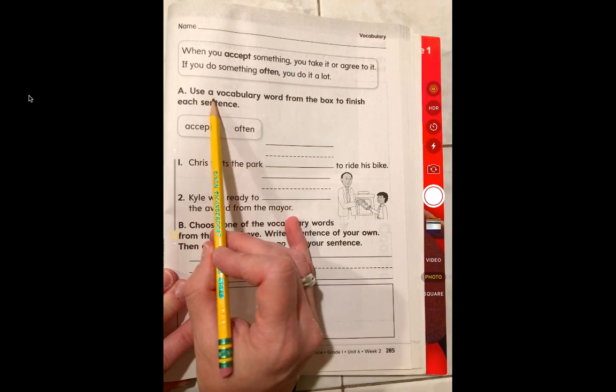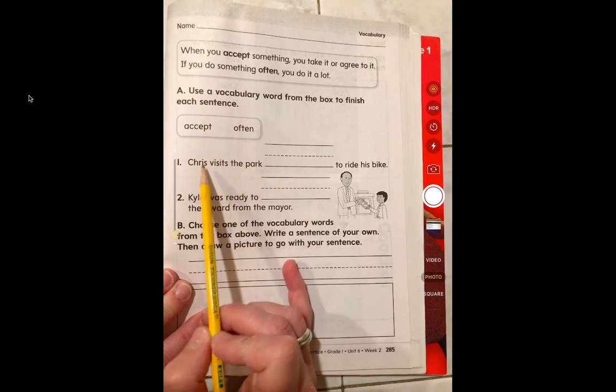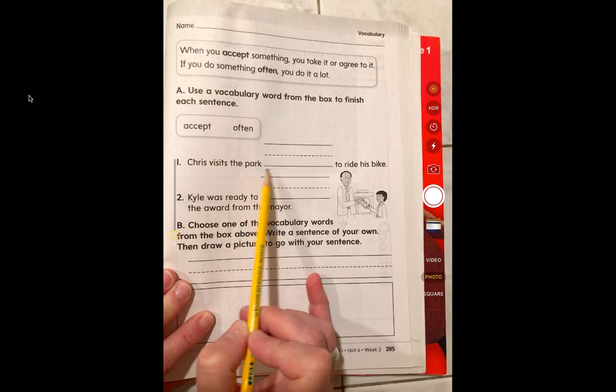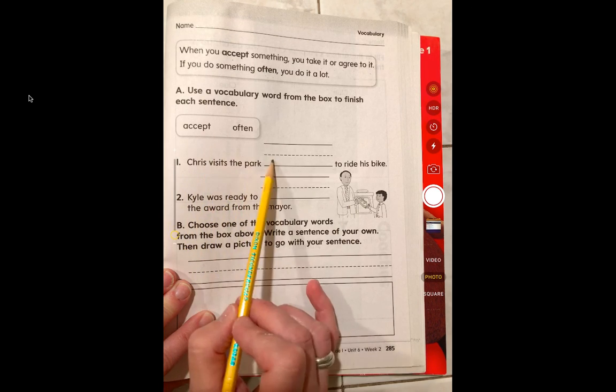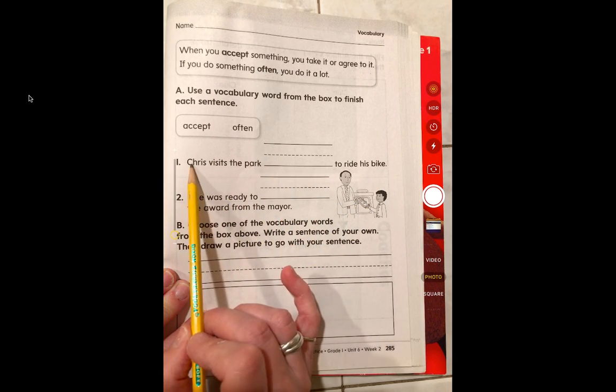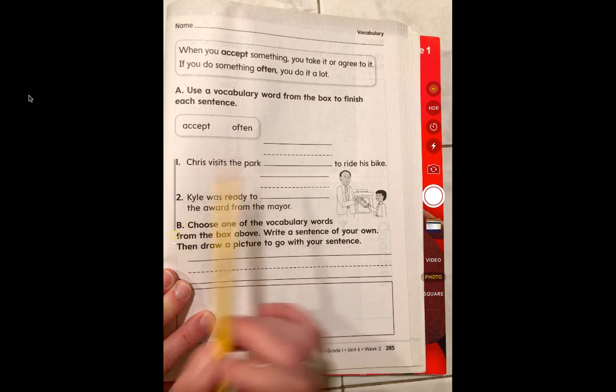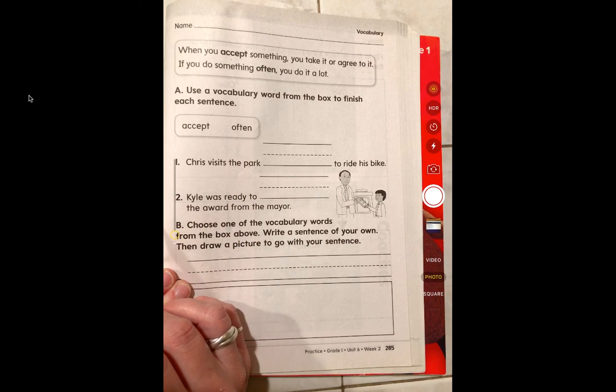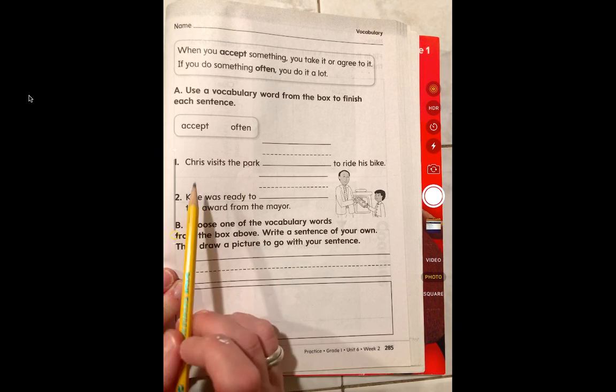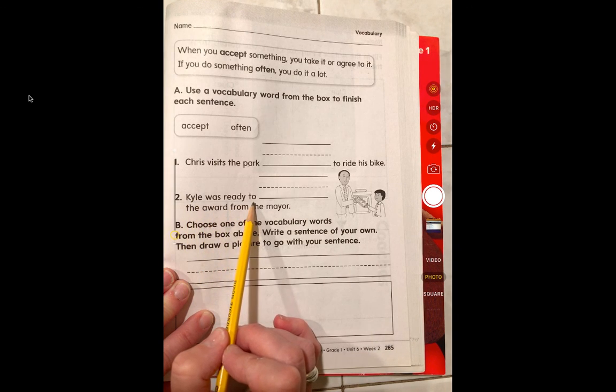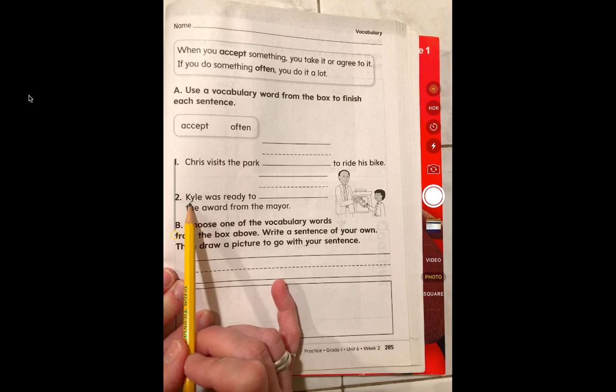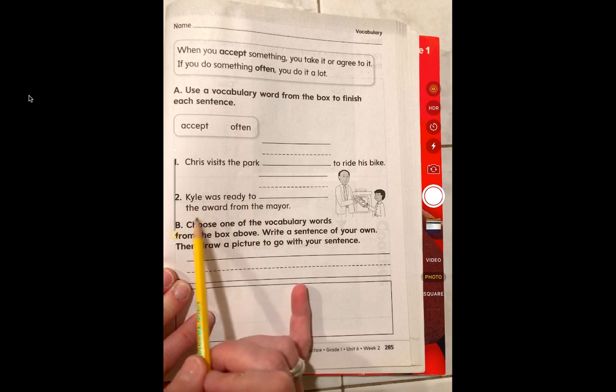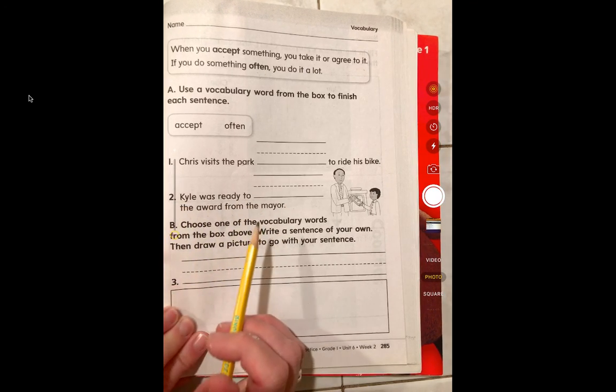This says use a vocabulary word from the box to finish each sentence. Chris visits the park blank to ride his bike. Chris visits the park except to ride his bike or Chris visits the park often to ride his bike, which sounds better? Then Kyle was ready to accept the award from the mayor or Kyle was ready to often the award from the mayor, which makes sense?